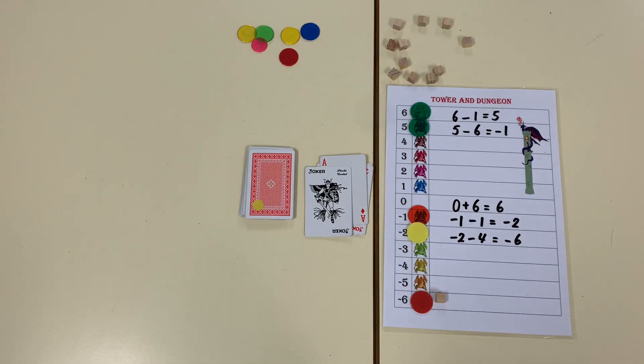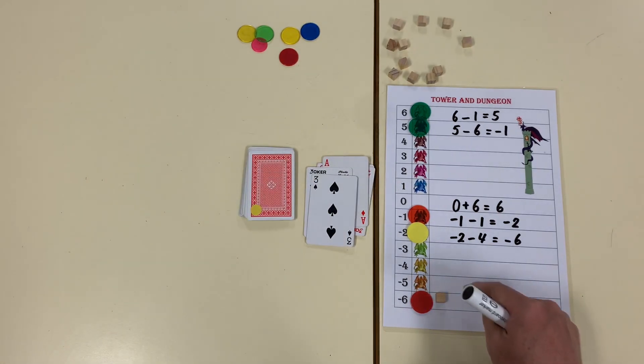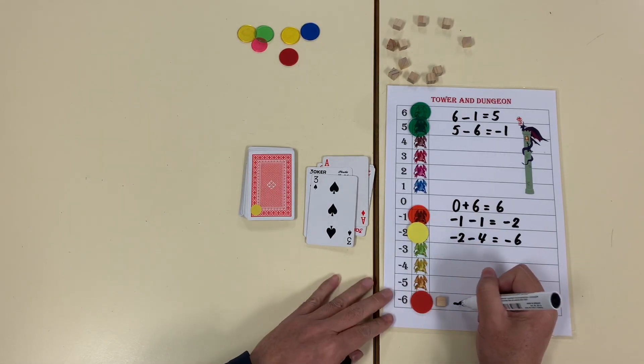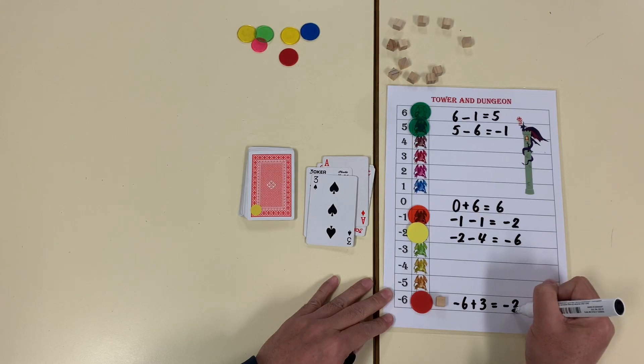Now it's your turn. My turn again. Three. I'm doing well. One, two, three. So it's minus six. I'm going to go up three. It will be minus three.